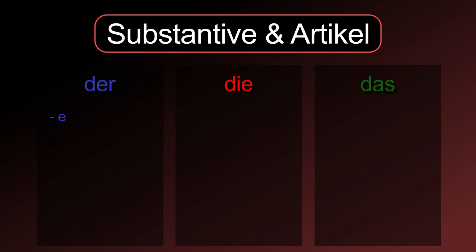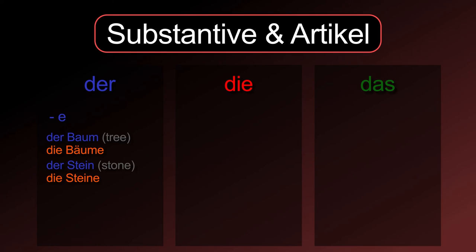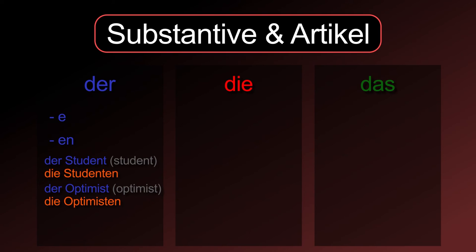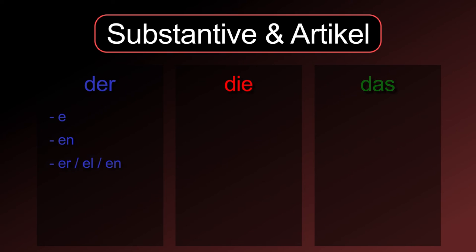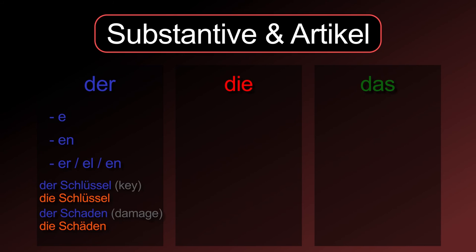The most important plural suffix for masculine nouns is -e: die Bäume, die Steine. Some nouns get the -n suffix: die Studenten, die Optimisten. Nouns that have the suffix -r, -l, or -n will stay the same, but often also get an Umlaut: die Schlüssel, die Schäden.